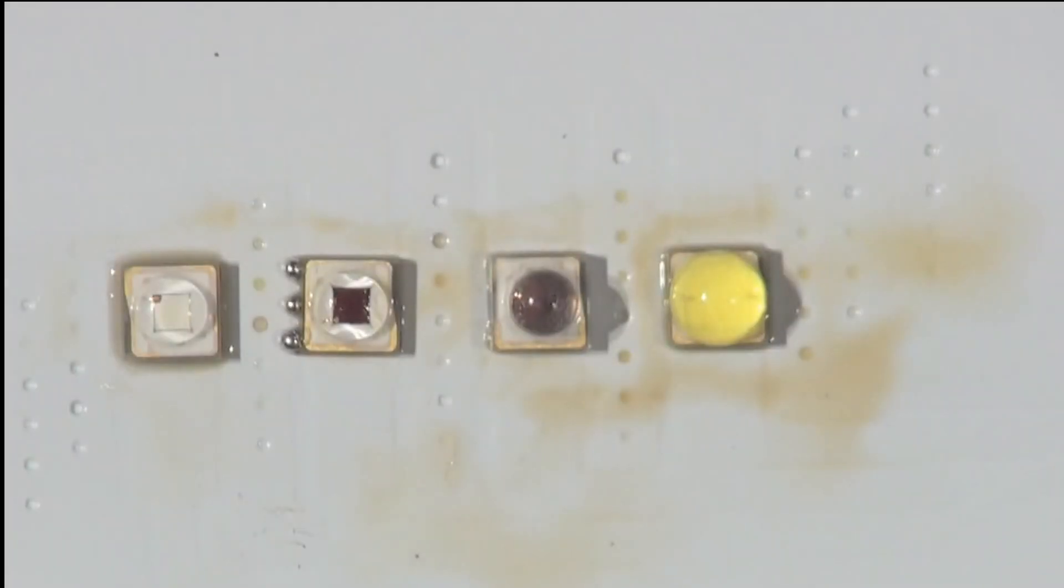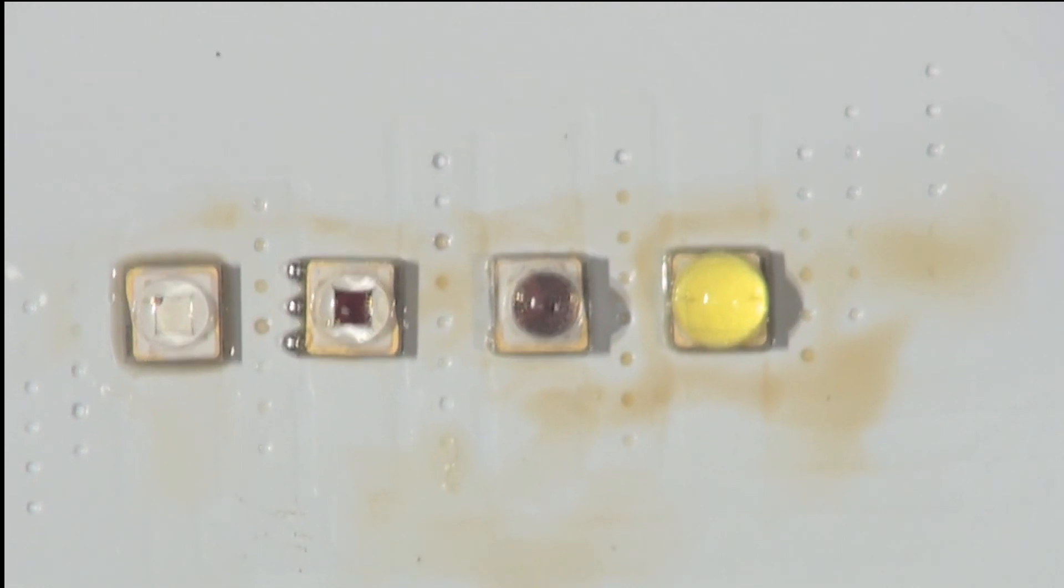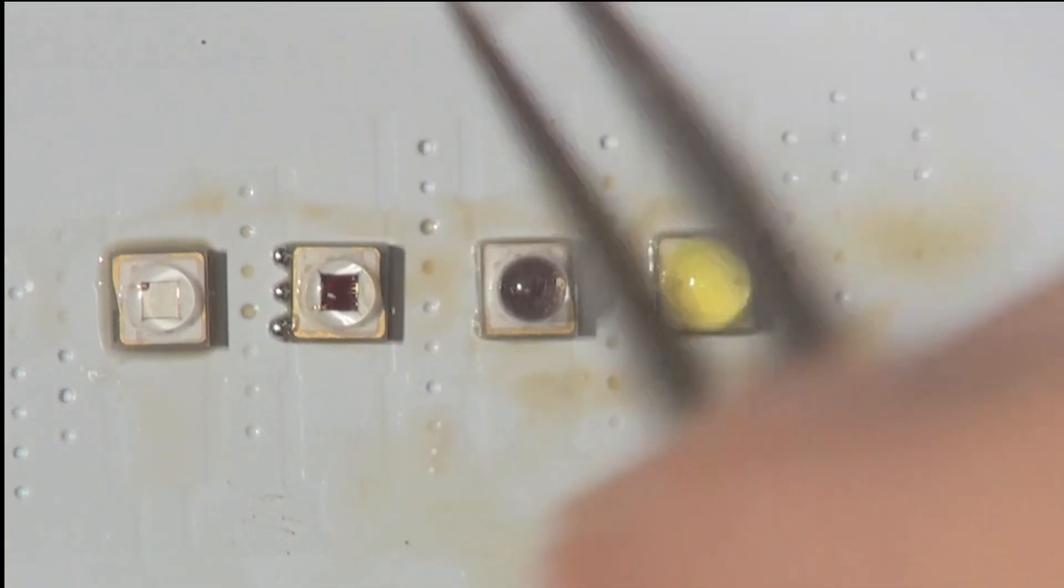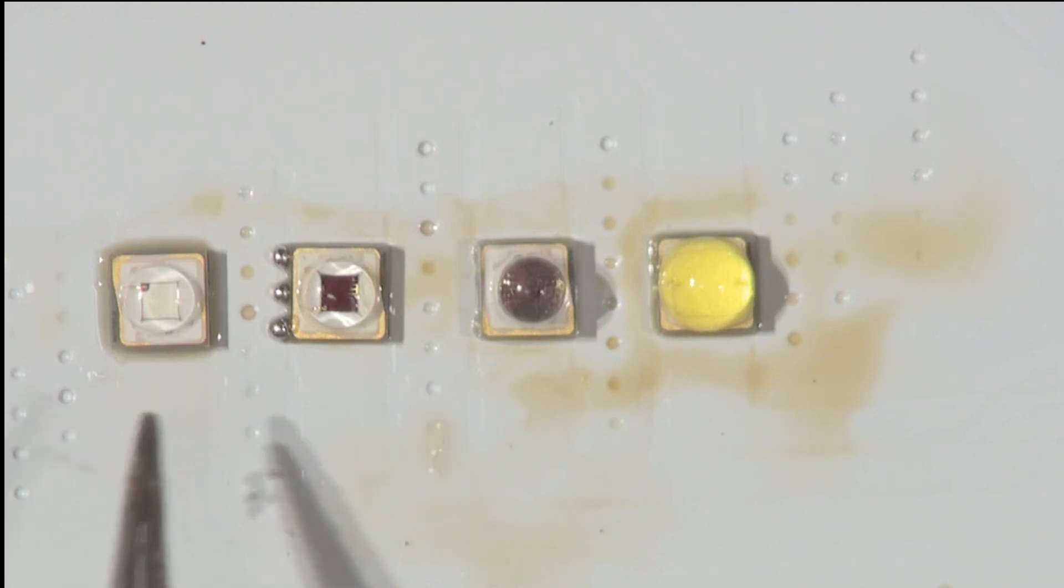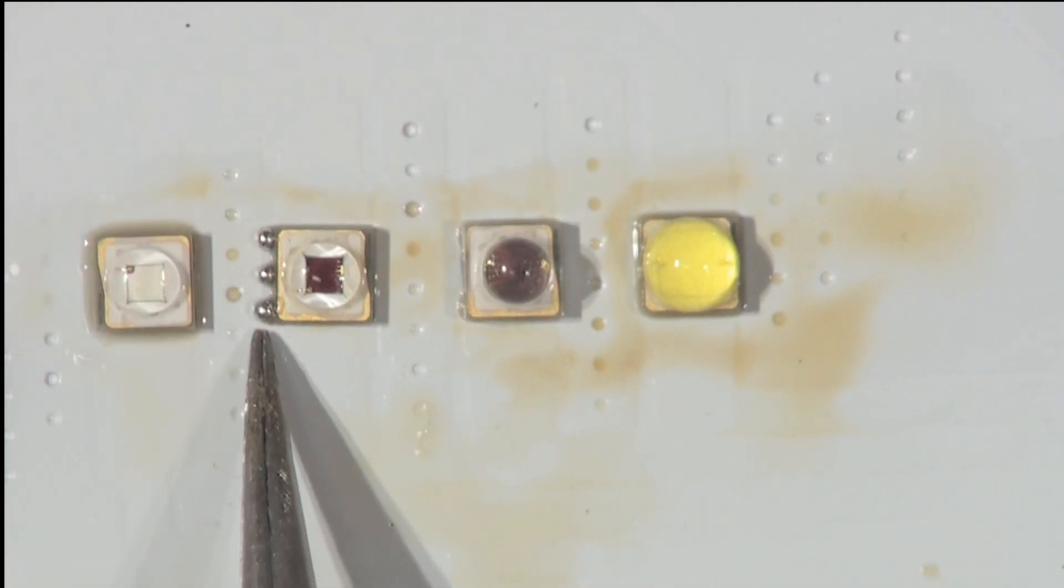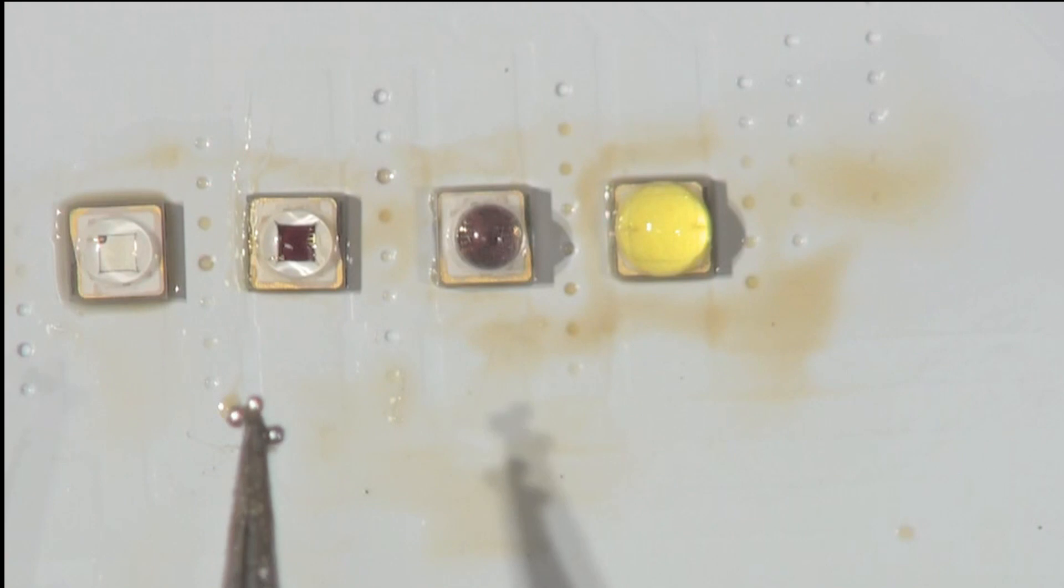The solder in general, if the pads are correct, will position the component in the right place. I wasn't looking forward to soldering these LEDs, but as it turns out, it's much easier than I thought. If you've got a little bit of extra solder which has come out of the joint, you can just push it away. It's just little bubbles.